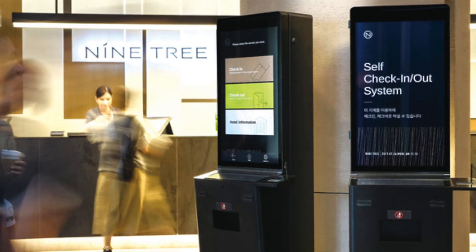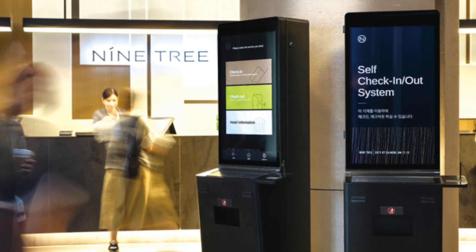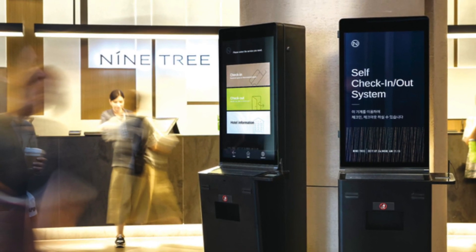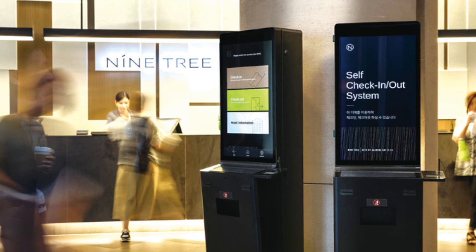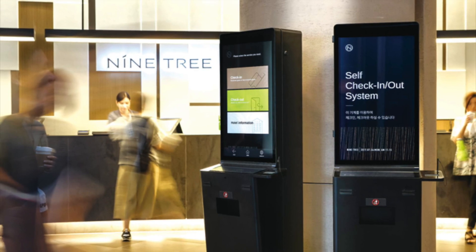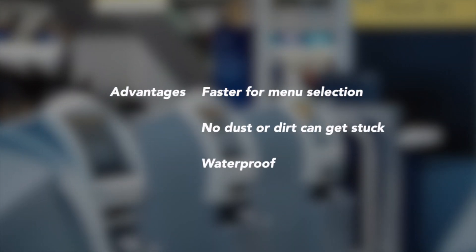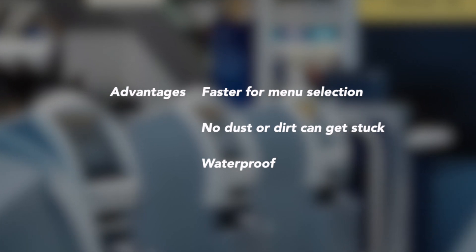For example, in fast food restaurants where it uses symbols for convenient orders, or in self-checking machines in airports. The advantage of concept keyboards is that they are faster for menu selection and no dust or dirt can get in between the keys.